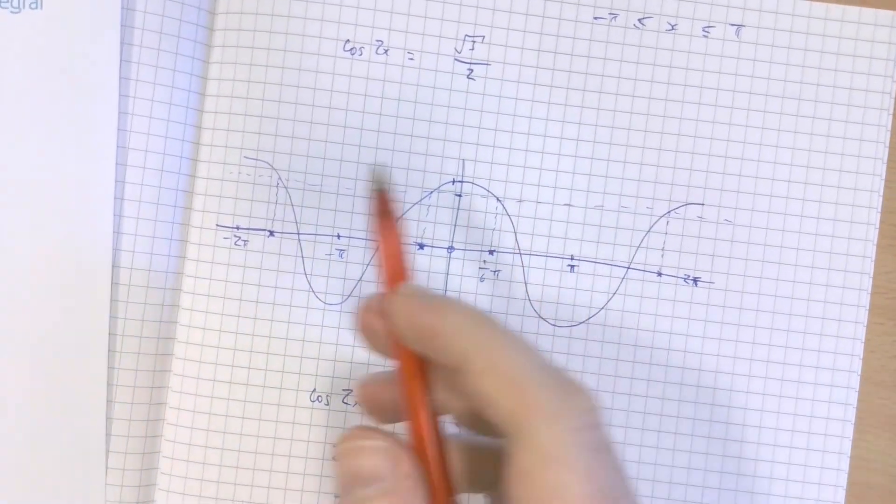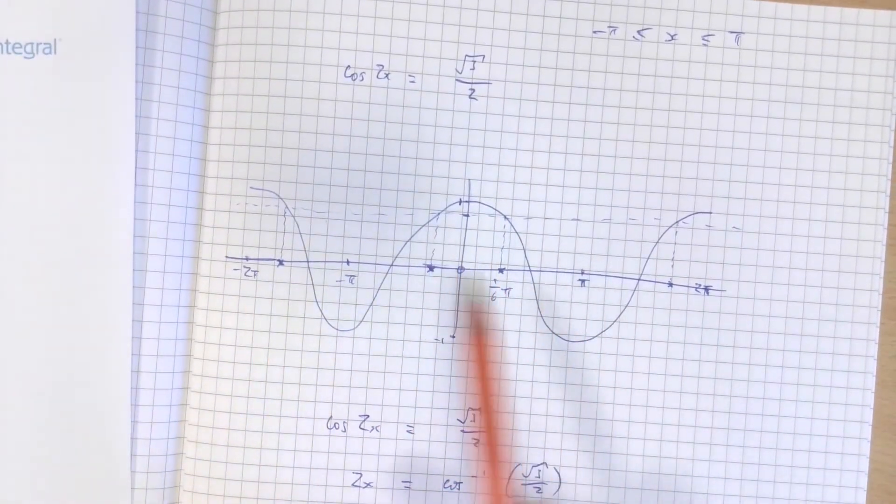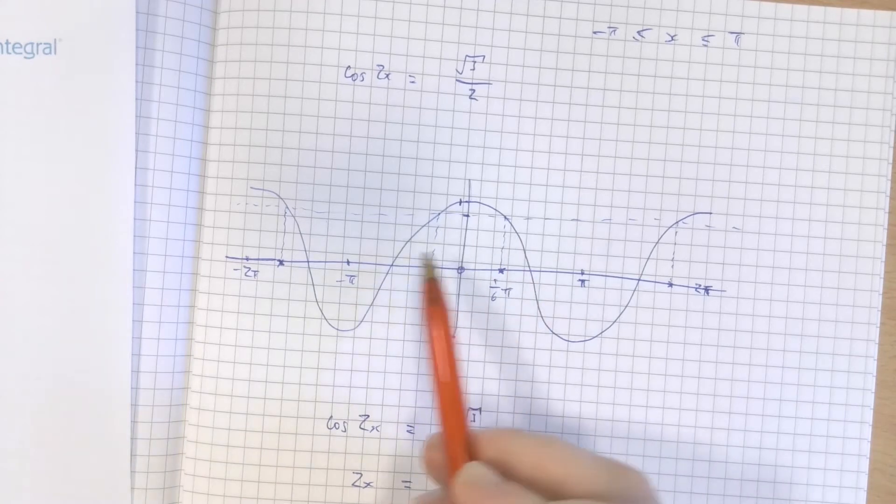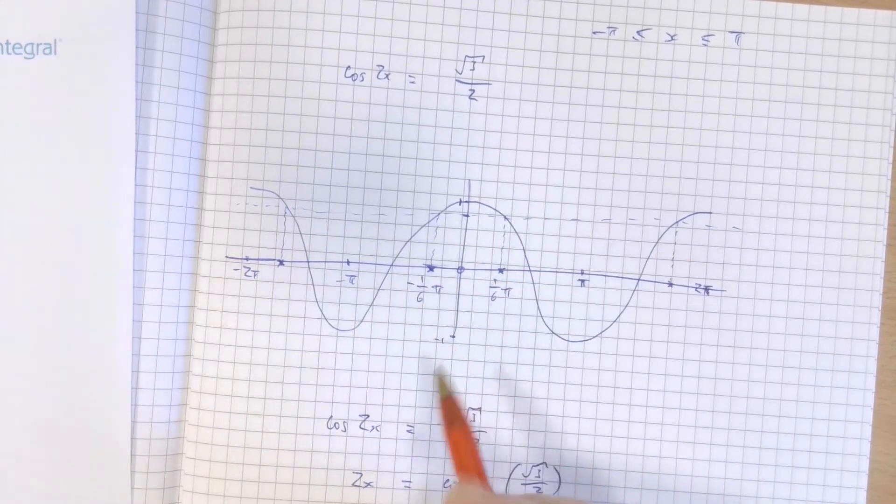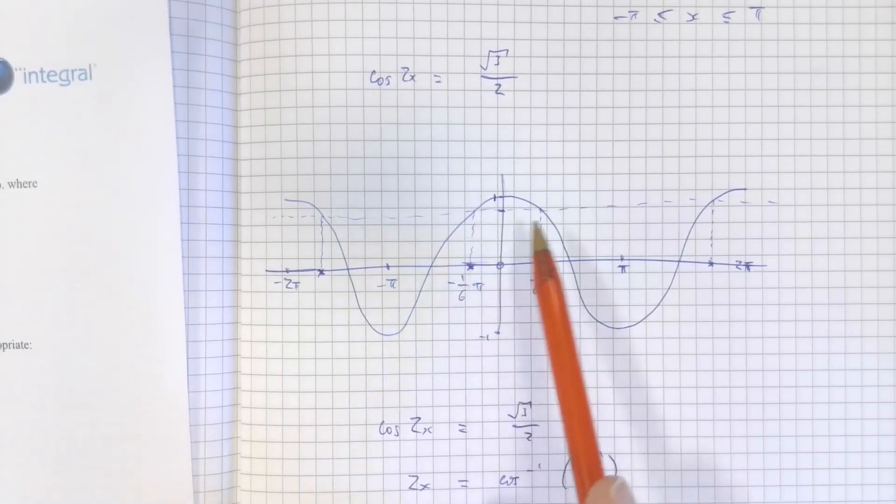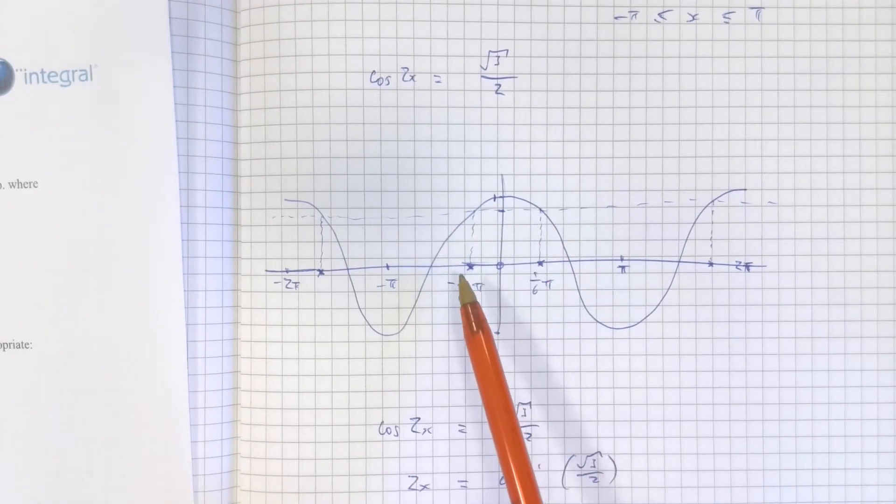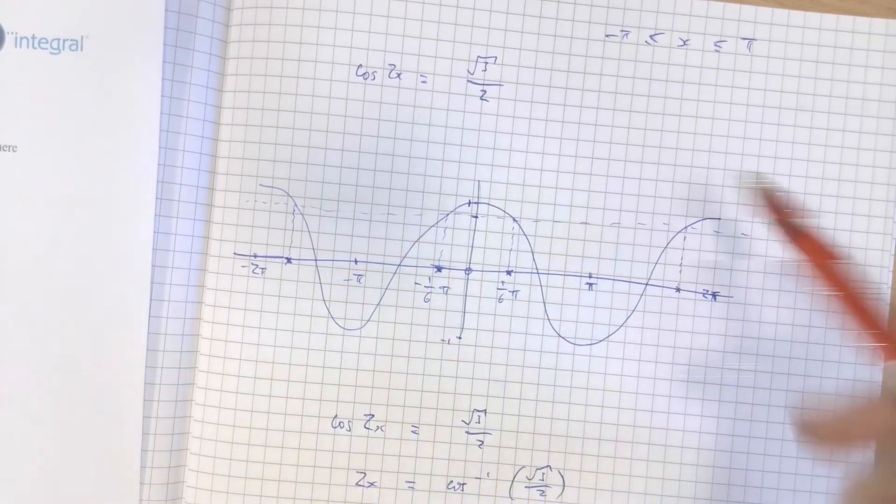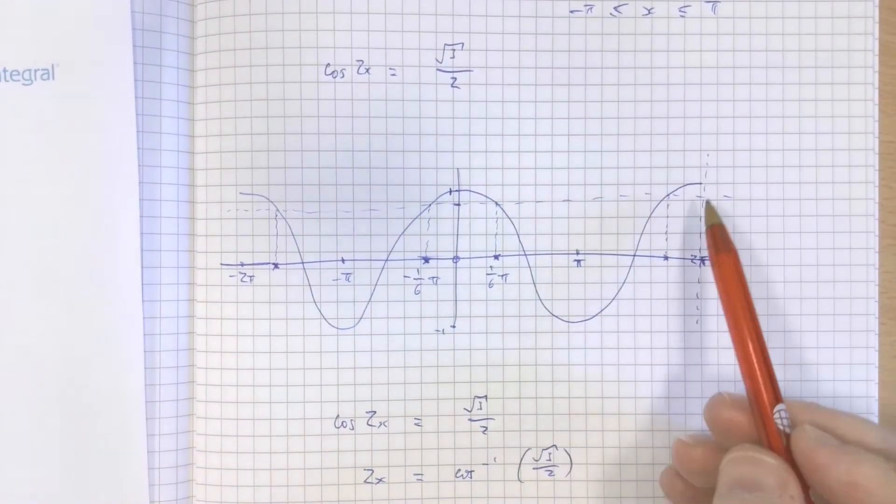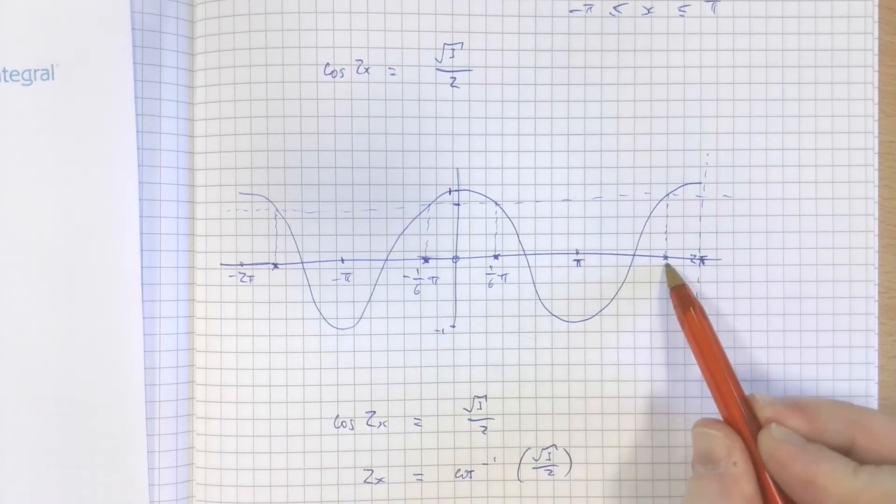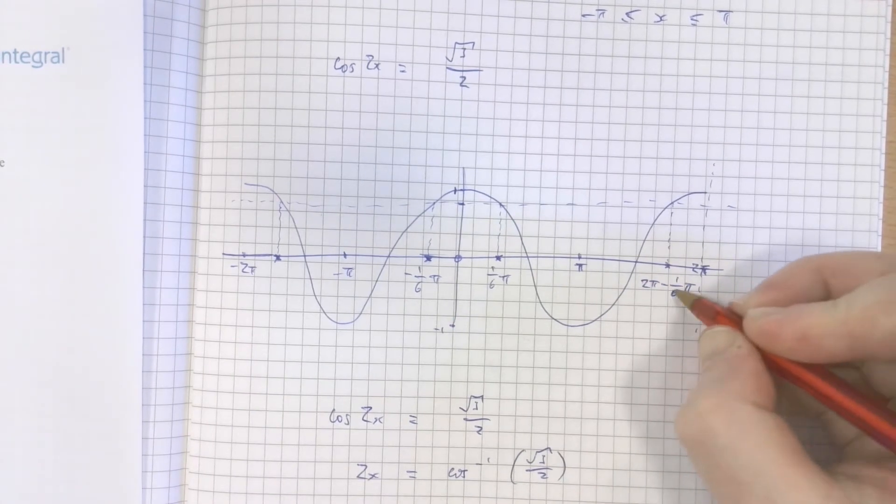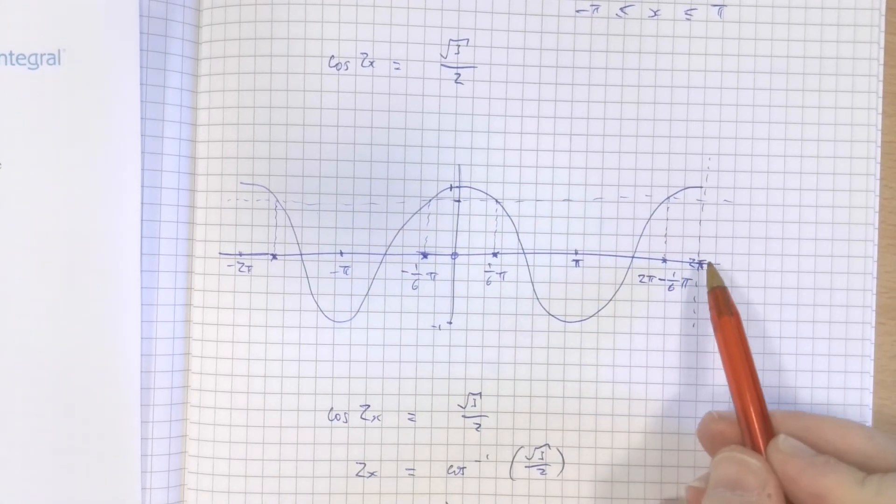Now, if I think about the symmetricality of this cos graph, everything's basically a mirror image of itself within this pattern. Then I can pretty quickly work out that this negative value on this side is going to be negative π/6, simply because it's the same distance away from the y-axis on the other side. Mirror image.